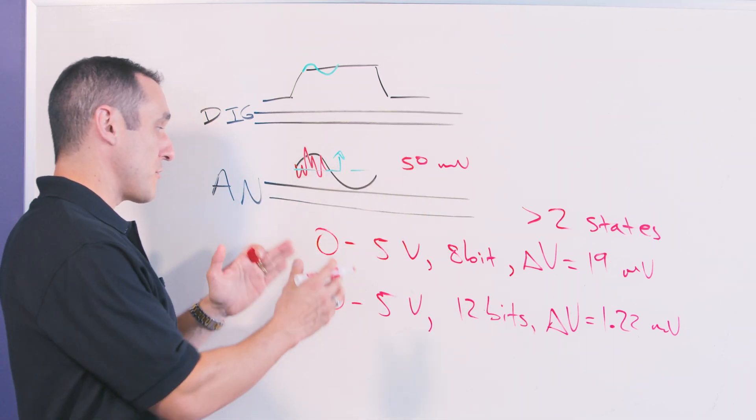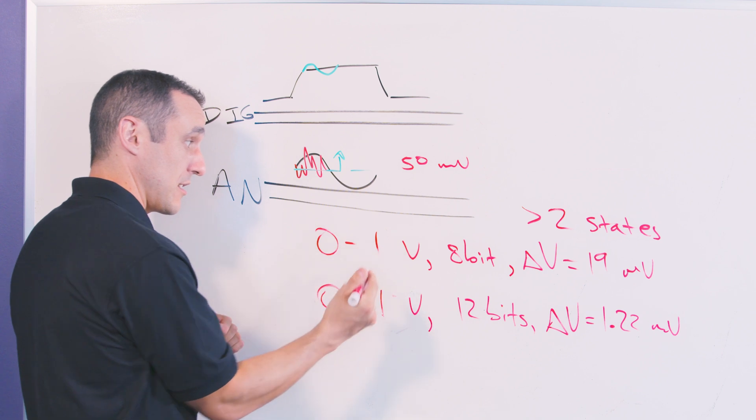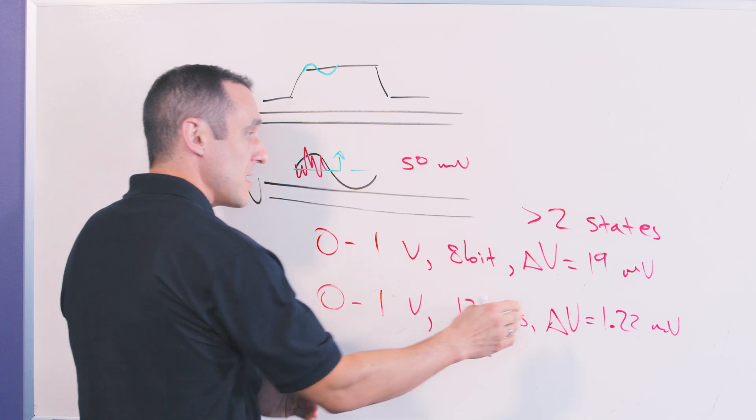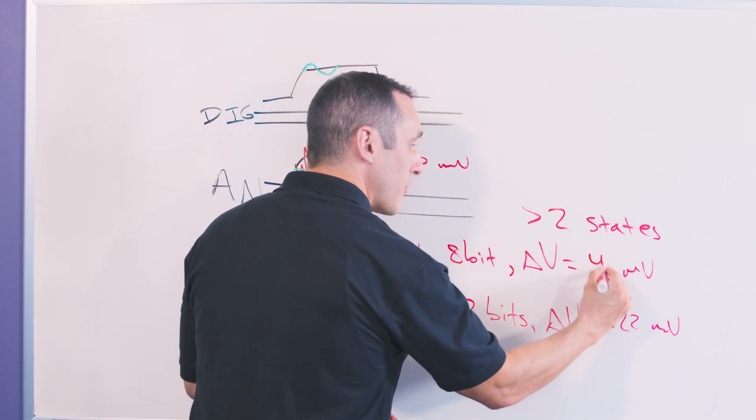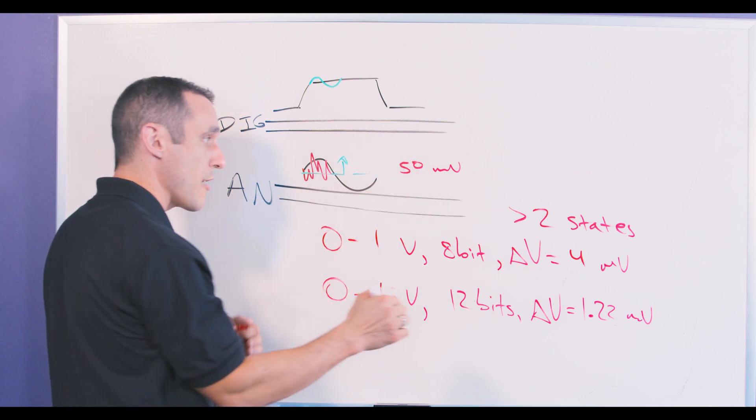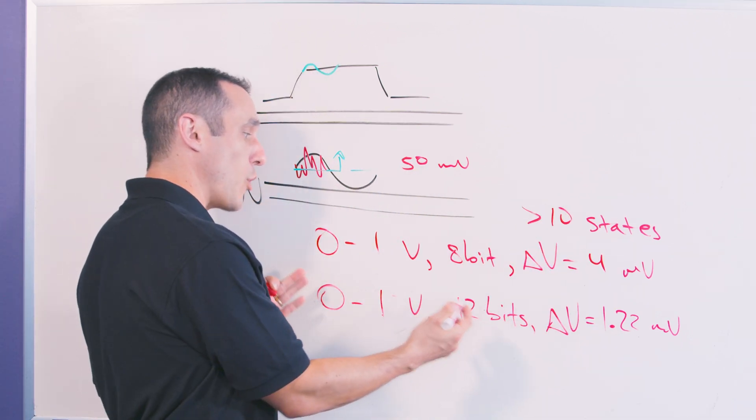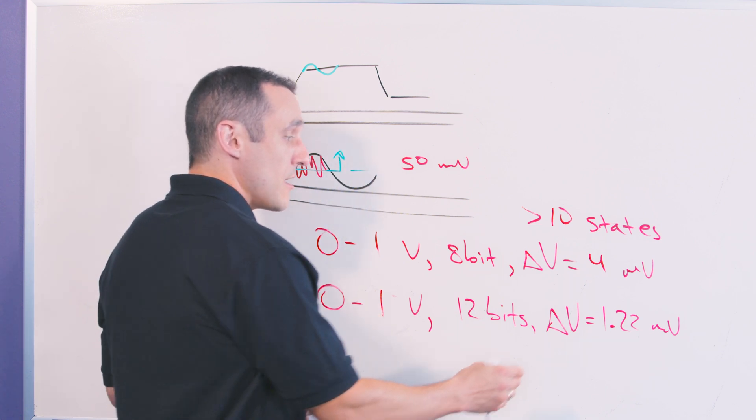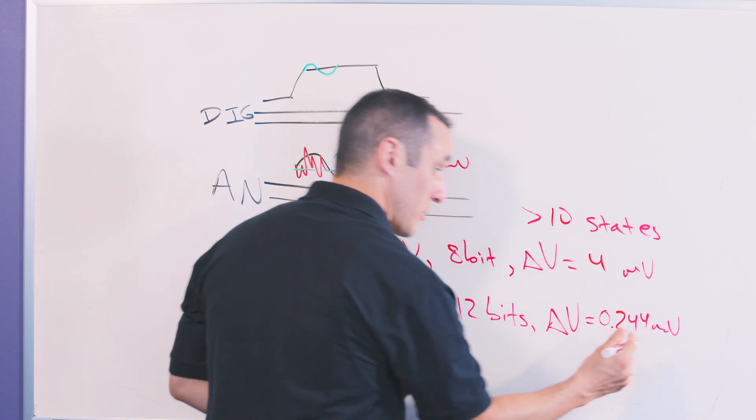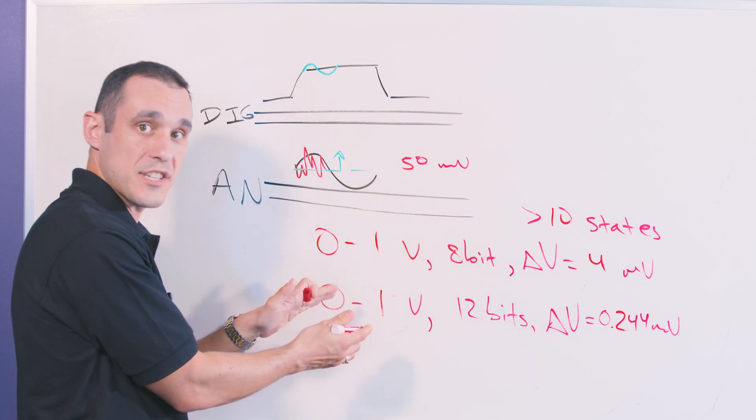Now let's suppose instead of trying to measure a 0 to 5 volt signal, we were measuring, let's say, a 0 to 1 volt signal. Well now in this case, if we have a 0 to 1 volt signal with an 8-bit ADC, instead of having 19 millivolts per state, we have 4 millivolts per state. This 50 millivolts peak crosstalk creates much more error and instead of being two states worth of error, it's actually 10 states worth of error. So now in the case of the 12 bit ADC with a 0 to 1 volt signal, now this goes down by a factor 5 to 0.244 millivolts. So you can see now that our error gets even larger in this case when we need to measure even smaller signals.